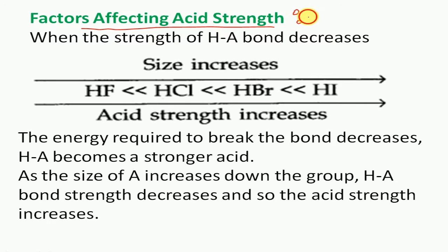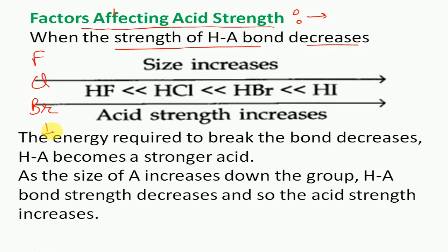First factor affecting acidic strength: when does the strength of HA decrease or increase? We look at the halogen family — fluorine, chlorine, bromine, and iodine — with HF, HCl, HBr, and HI. According to the Arrhenius concept, any species that gives H+ is acidic, so all of these are acids, but we need to know how much strength each one has.